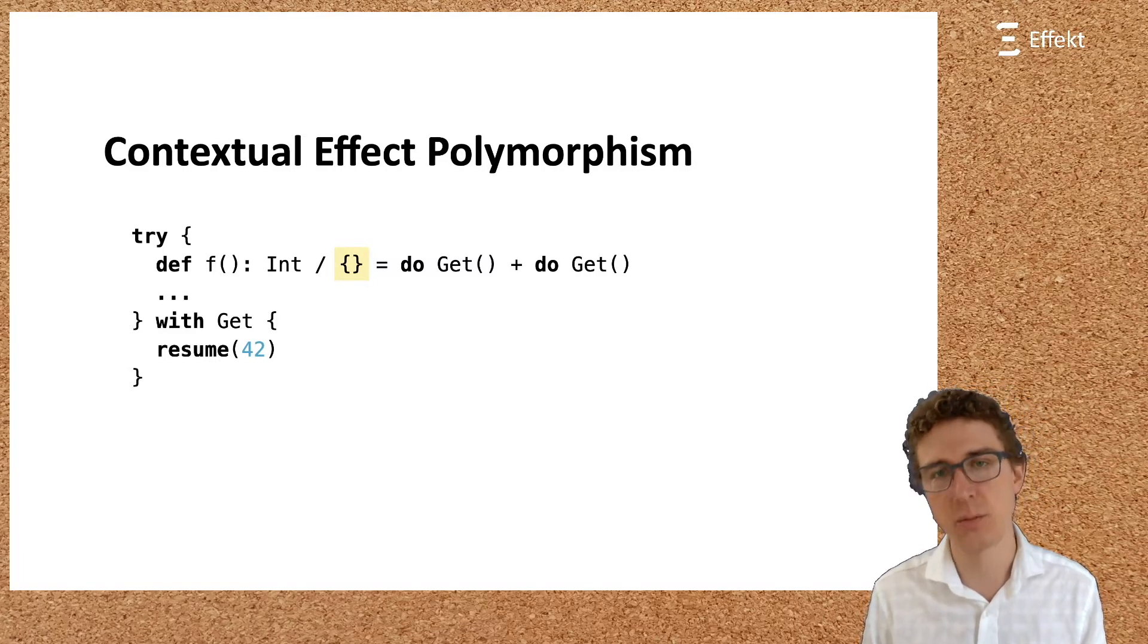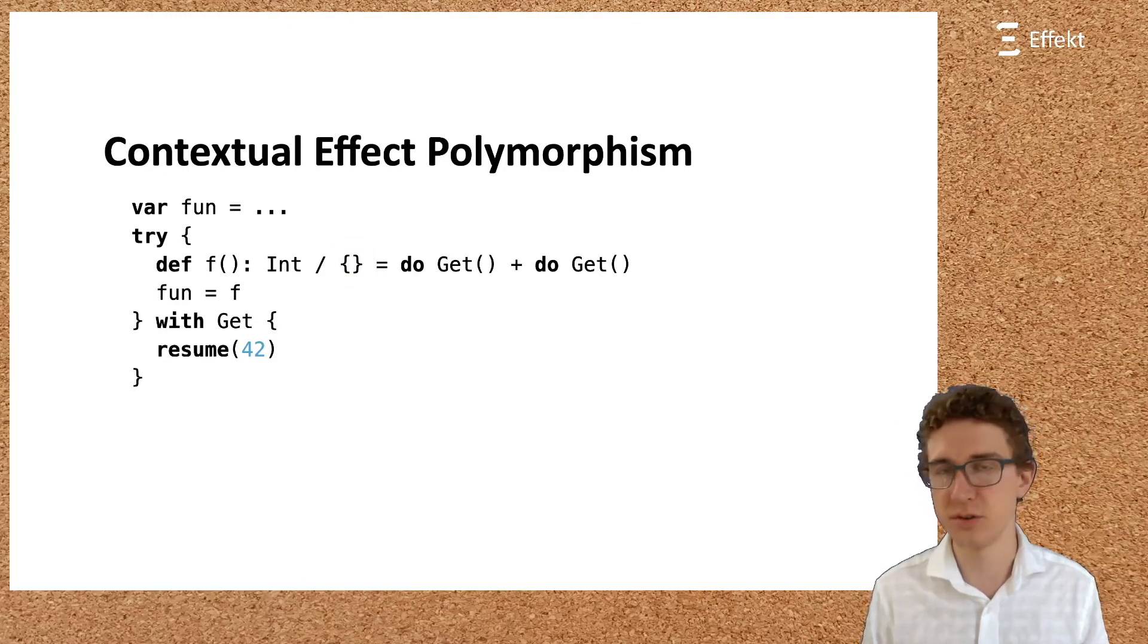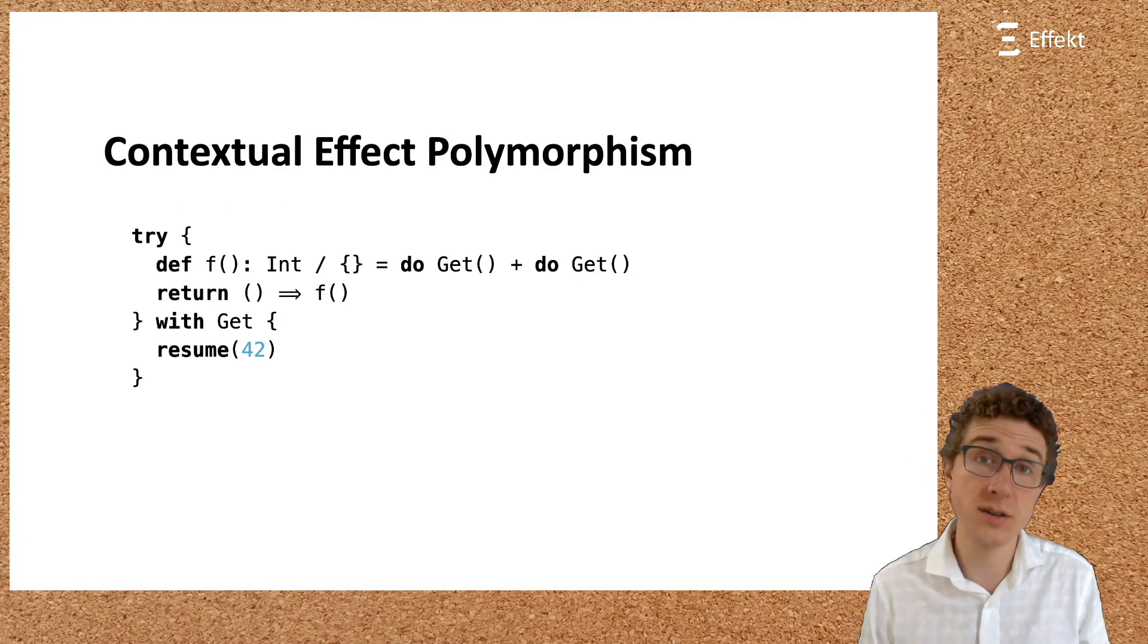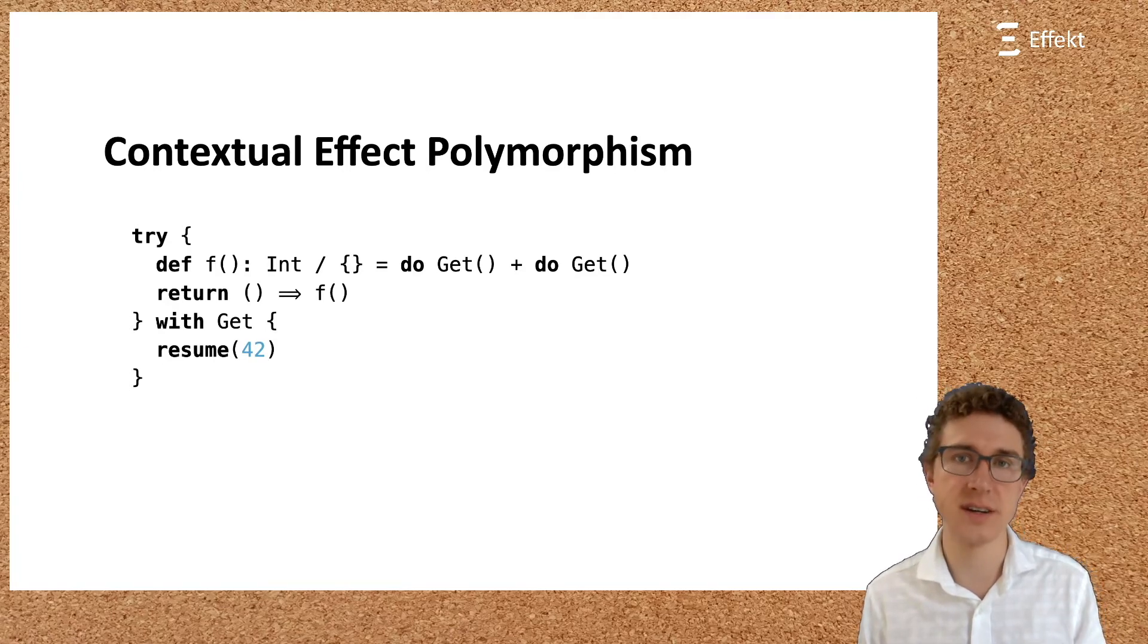In many languages, there would be multiple ways for f to leave its scope. By simply returning it, by writing it to a mutable variable, or by closing over it. So, how do we prevent f from leaving the scope it is defined in?